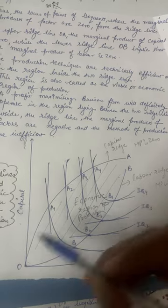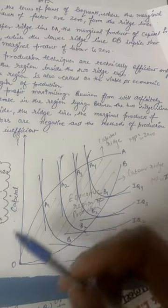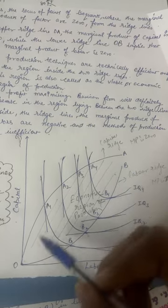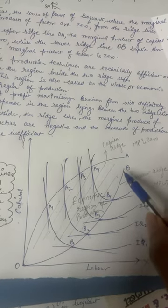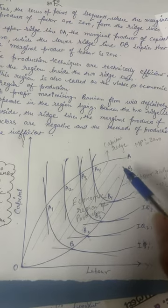When you join these points, you get the capital ridge line and labor ridge line. These are the regions within which a producer would be producing, within the region O-A and O-B. Your output would be efficient and these are the economic regions of production.